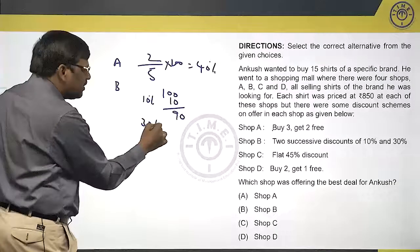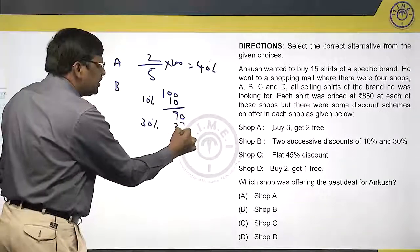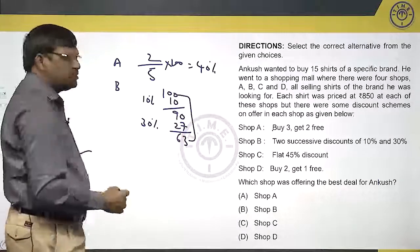Because it is successive discount. Suppose if the price is 100 rupees, first he is getting 10% discount. That is 10 rupees, remaining is 90.